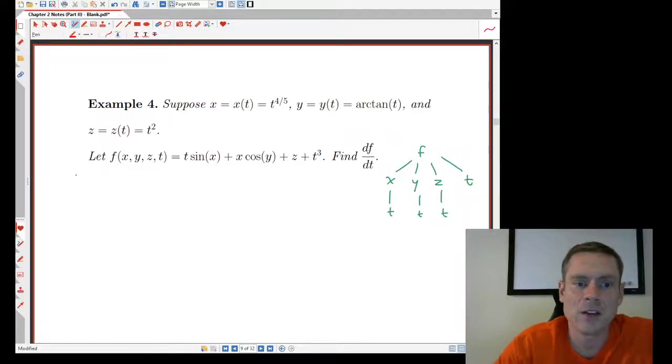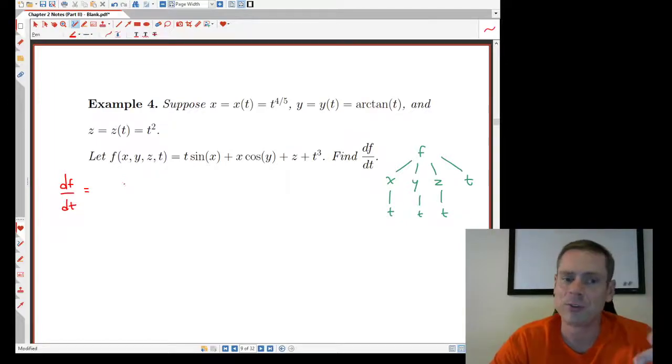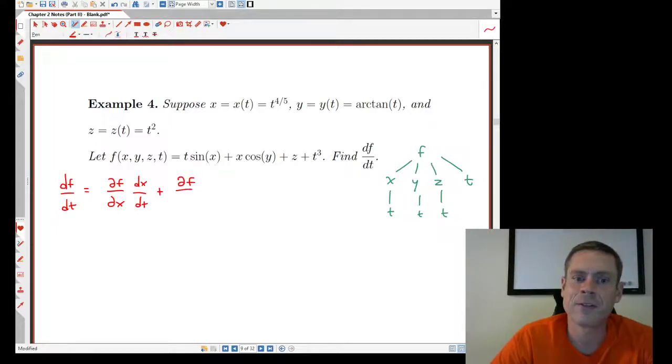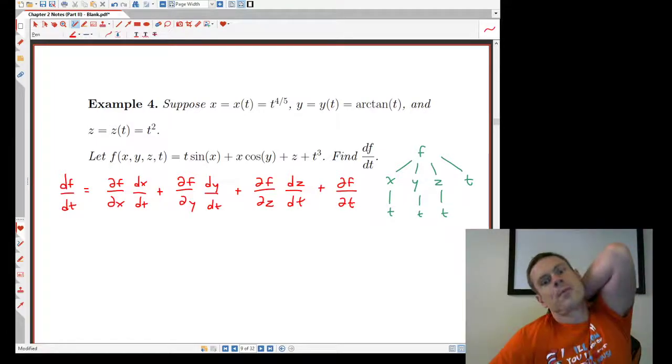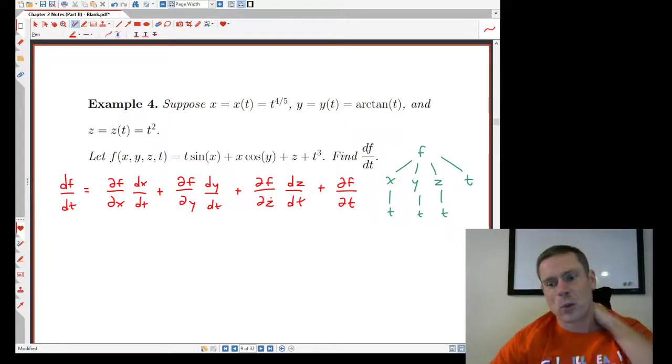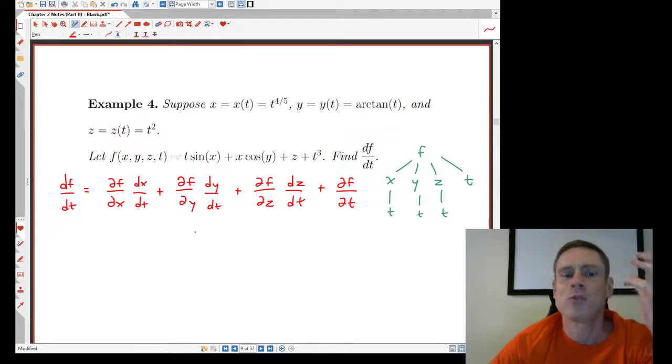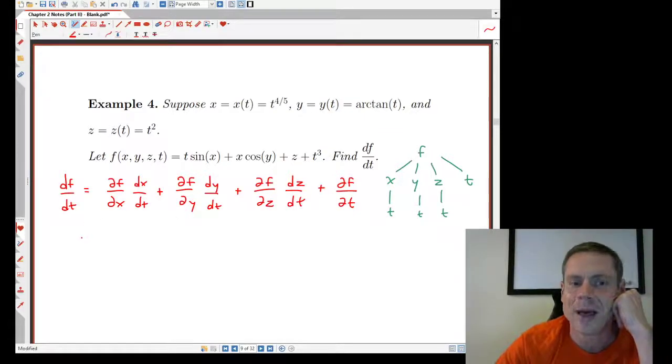finding df/dt is going to be equal to, using this formula, ∂f by the first variable, ∂x, dx/dt, plus ∂f/∂y, second variable, dy/dt, ∂f/∂z, dz/dt, and then the partial with respect to t. So we have this, a whole bunch of quantities here that it looks like we have to calculate, but each one of them in themselves really isn't too bad. So let's go forward and see if we can do this.